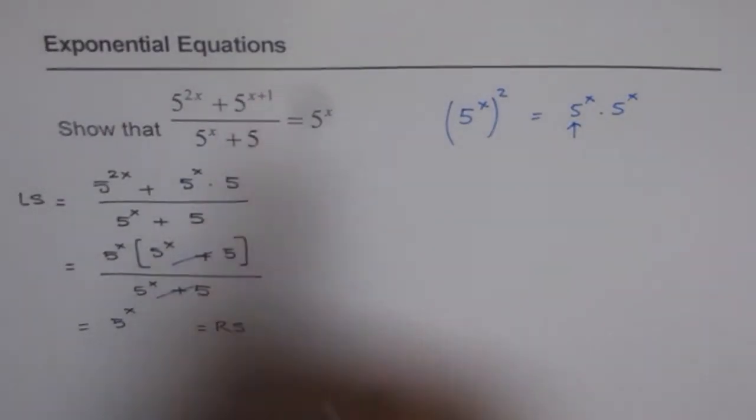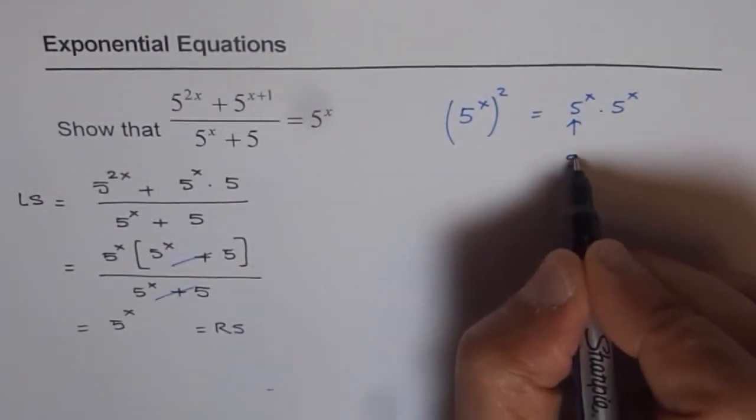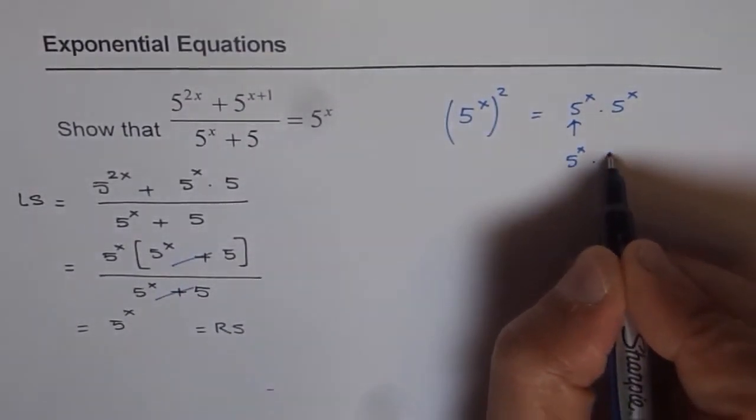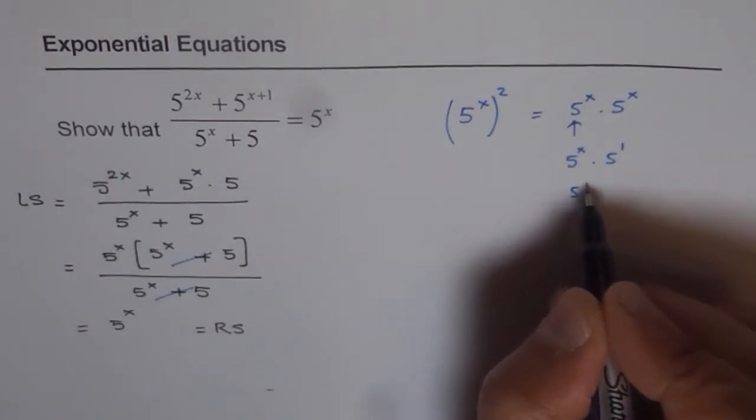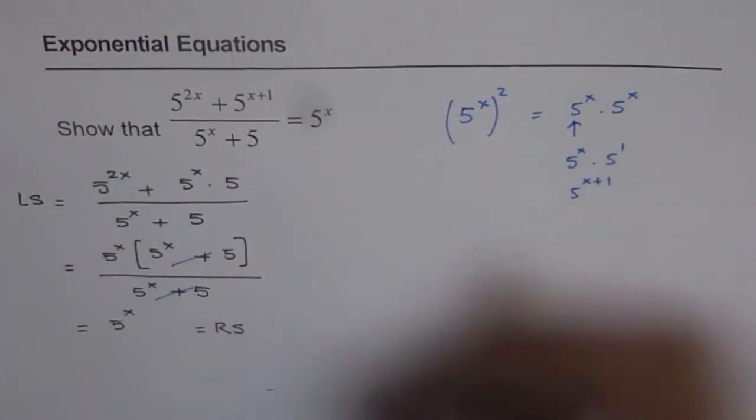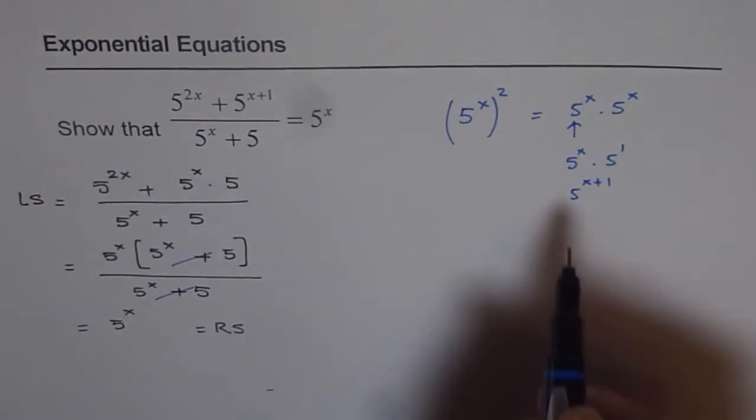And 5 to the power of x plus 1 really means 5 to the power of x times 5 to the power of 1. Then you add them up, you get 5 to the power of x plus 1. So these two are equal expressions.